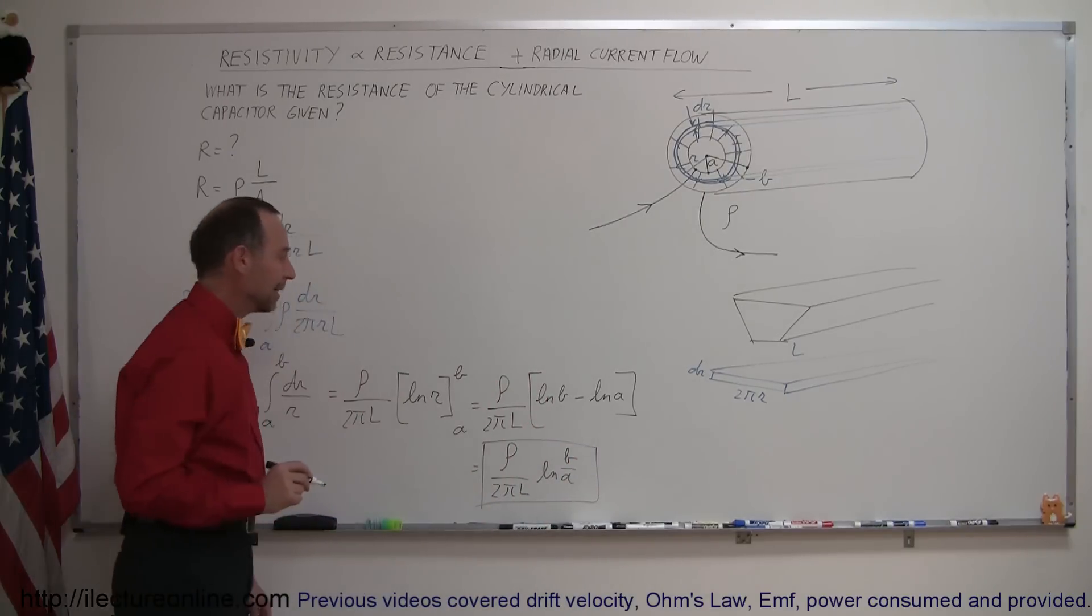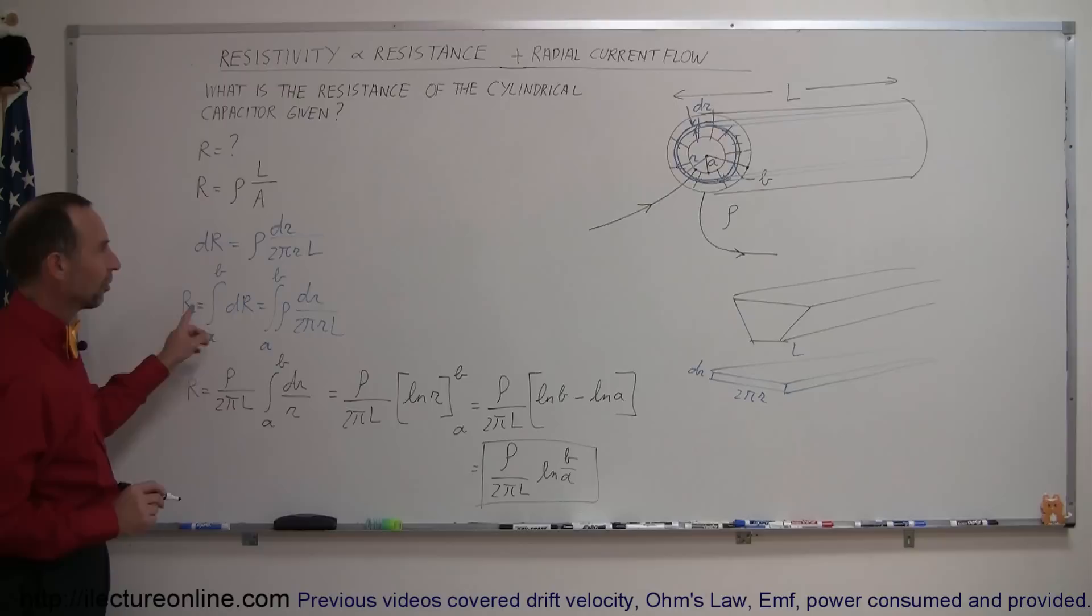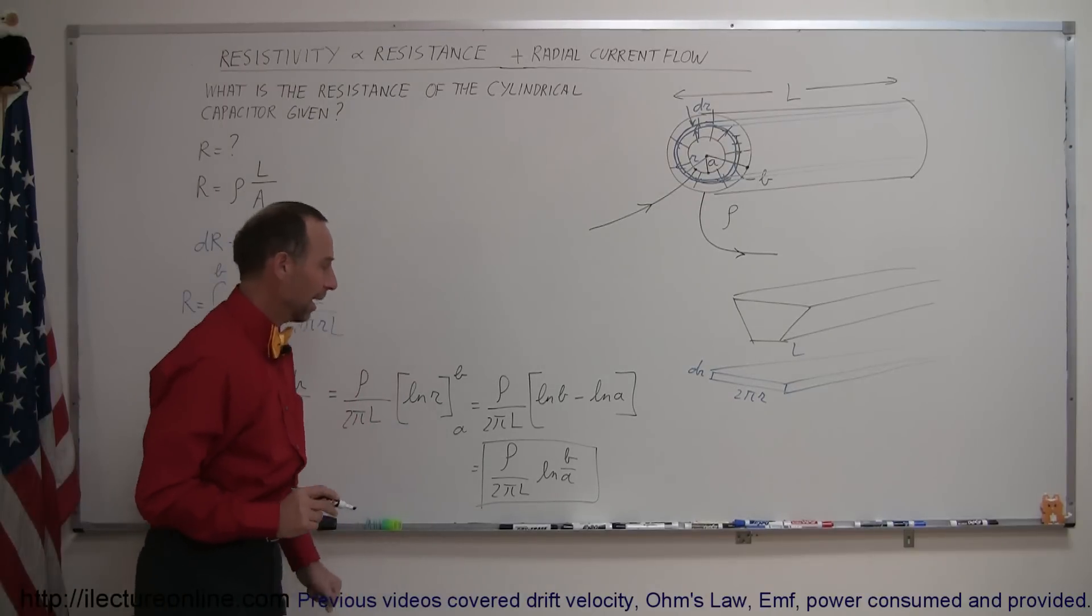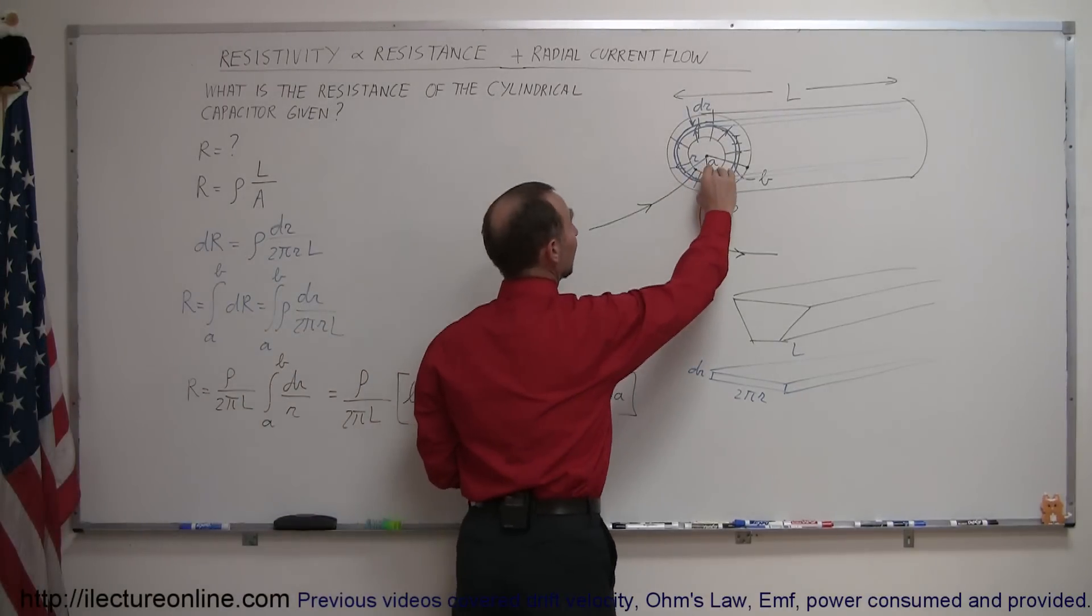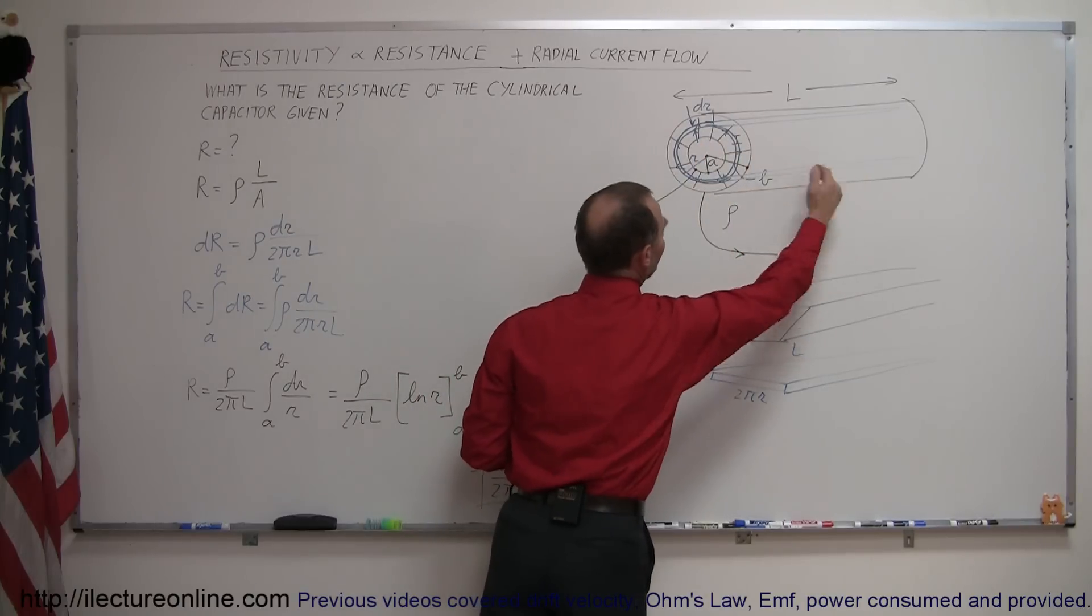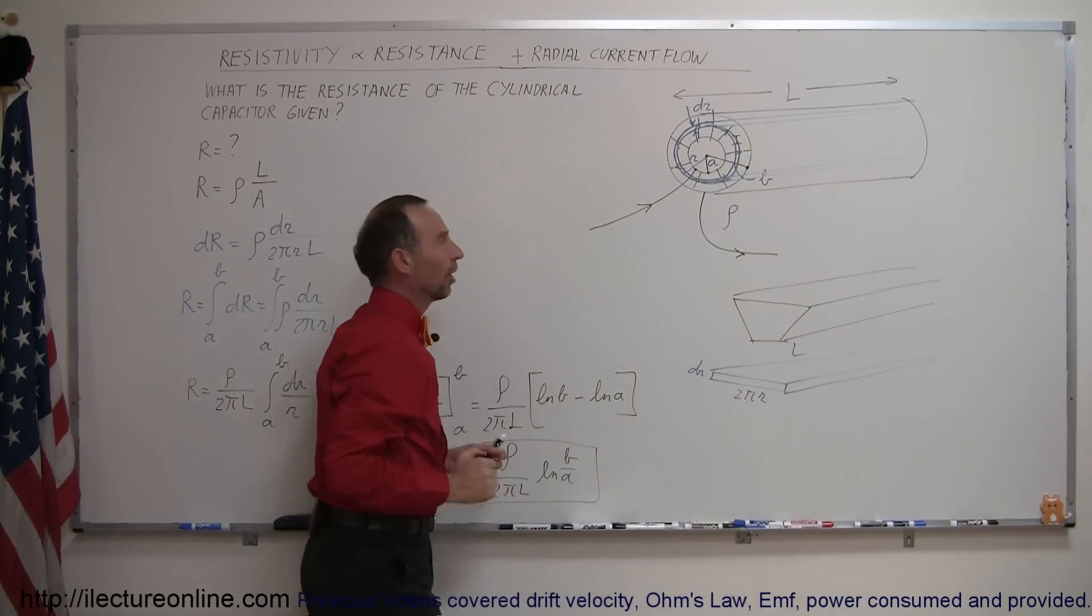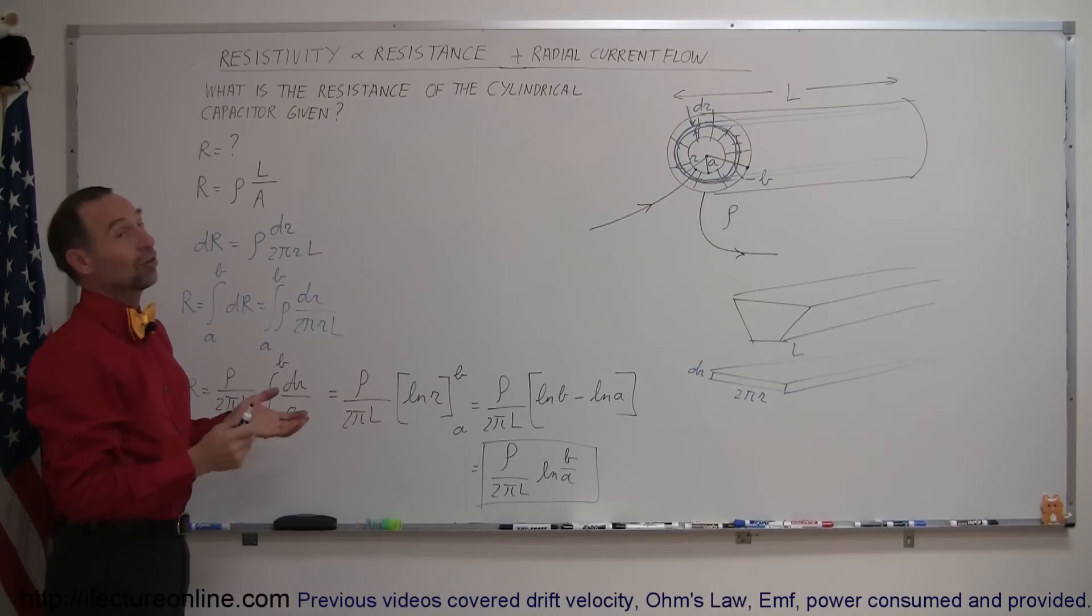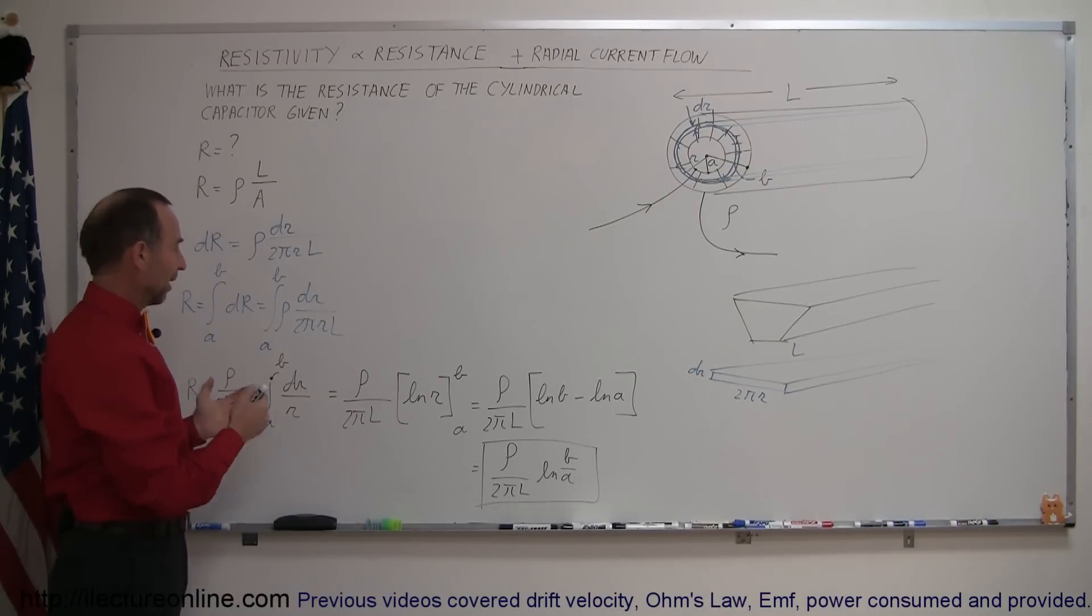Like that. And that is the resistance of a cylindrical object like that, where the current flows from the inside radius A to the outside radius B, from the inside to the outside, not along the length but along the thickness of that strange object resistor.